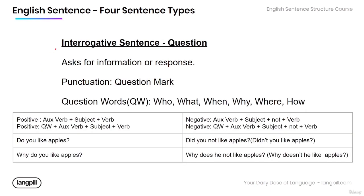For the interrogative sentence, this is a question type sentence. It asks for information or asks for some response. The punctuation mark is a question mark. Many times you will use these question words to make your question: who, what, when, why, where, or how.